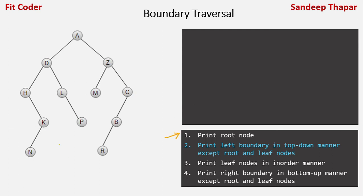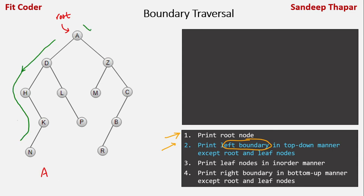In the first step we print the root node, so we print node A. In the second step we print the left boundary in a top-down manner, excluding the root and the leaf nodes. The left boundary nodes, excluding A and N, are D, H, and K.